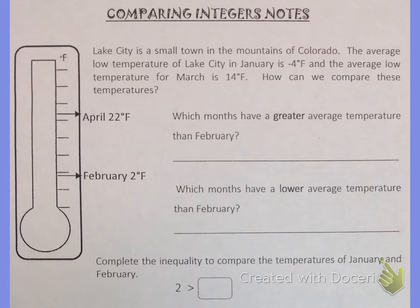Lake City is a small town in the mountains of Colorado. The average low temperature of Lake City in January is negative 4 degrees Fahrenheit and the average low temperature for March is 14 degrees Fahrenheit. How can we compare these temperatures?